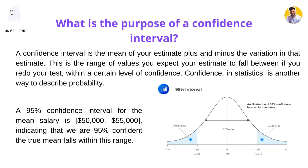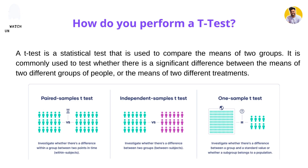The next interview question is: how do you perform a t-test? A t-test is a statistical test used to compare the means of two groups. It is commonly used to test whether there is a significant difference between the means of two different groups or two different treatments. You can perform it using a paired t-test, an independent sample t-test, or a one-sample t-test — in all these ways it compares the mean with some other mean.